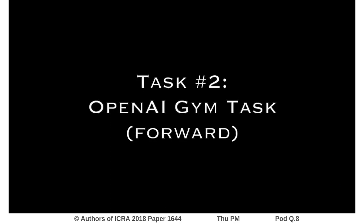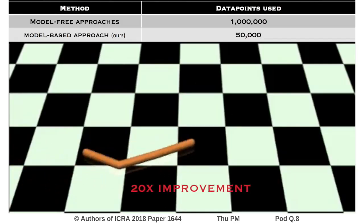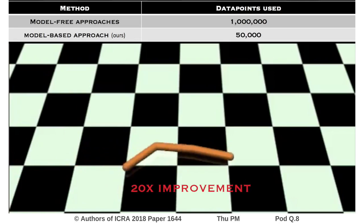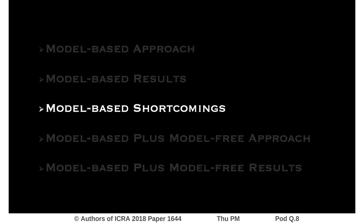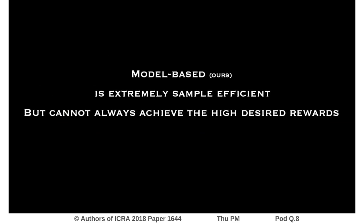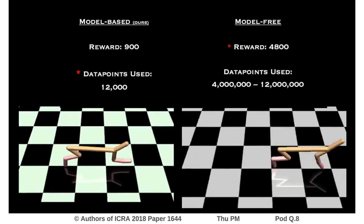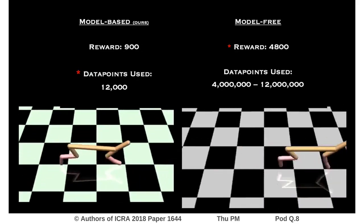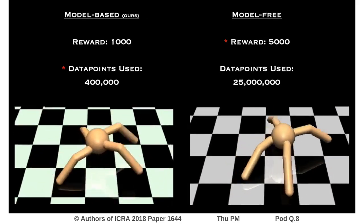Next, we show results of the model-based approach on the task of moving straight forward. This approach does, however, have shortcomings. While this approach is extremely sample efficient, it cannot always achieve the high desired rewards. Here, our model-based approach uses less data but achieves a slow forward gait, as opposed to model-free approaches that achieve running gaits.